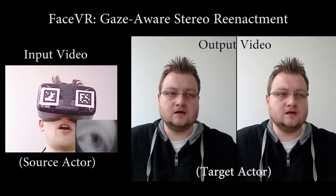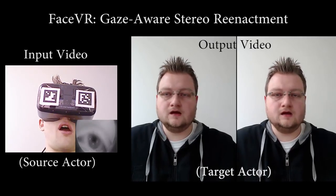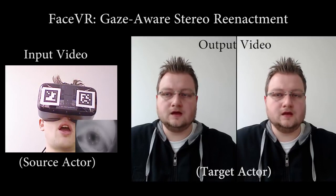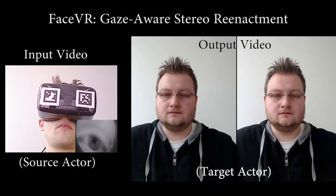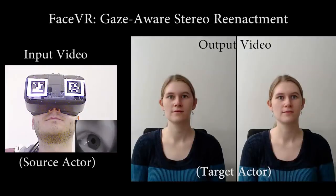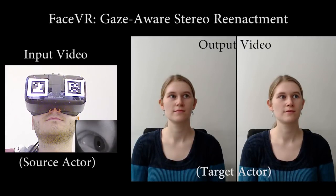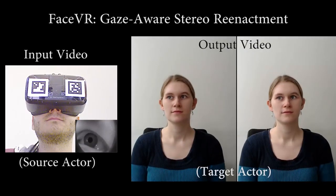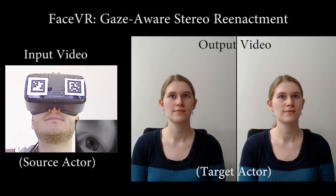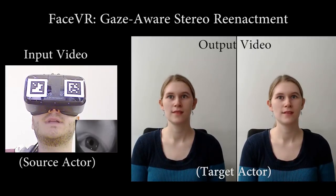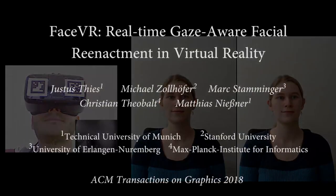Here we show a close-up of our reenactment results. On the left, we show input from both the external camera, used to track the lower part of the face, and from the internal IR camera. Our real-time approach drives the target actor on the right based on these inputs. Even eye blinks can be transferred from source to target, leading to realistic stereo re-renderings. Thank you for watching.